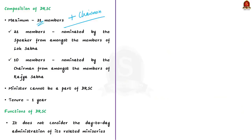Of the 31 members, 21 are nominated by the Speaker from amongst members of Lok Sabha, and the remaining 10 are nominated by the Chairman of Rajya Sabha from amongst members of Rajya Sabha. Importantly, a minister cannot be a part of a DRSC.